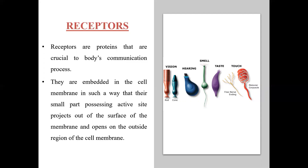We can see various receptors involved in senses like vision, hearing, and smell. Vision is due to receptors present in the eyes, hearing due to receptors in the ear, and smell due to receptors in the nose. Similarly, taste receptors are in our tongue, and touch receptors are present in our skin.